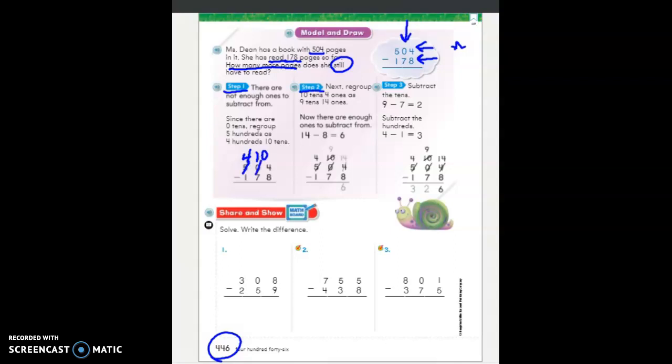Then go on to step 2. Next, regroup 10 10s and 4 1s as 9 10s. So this is where it gets tricky. This 10 now becomes a 9. So we can give that 1 10 to our 4 1s. So now we can subtract. And we have 14 take away 8 equals 6. And 9 take away 7 equals 2. 4 take away 1 equals 3.